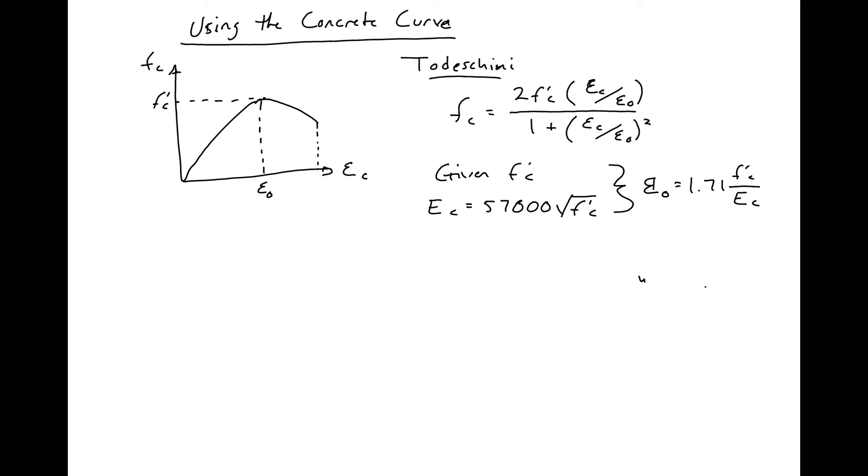From this now we can set up a table. With our epsilon c we can find our f_c. I like setting up a table for this using our Todeschini expression.